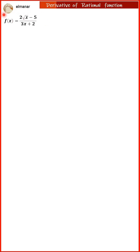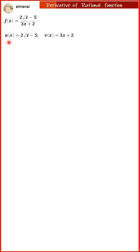The function f of x is equal to 2 times the square root of x minus 5, all divided by 3 times x plus 2. We introduce two auxiliary functions: u of x, which is equal to 2 times the square root of x minus 5, and v of x, which is equal to 3 times x plus 2.